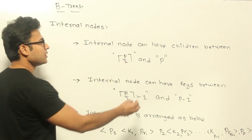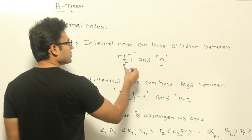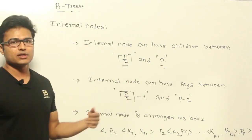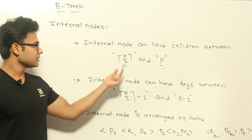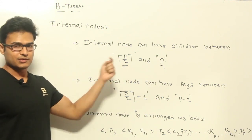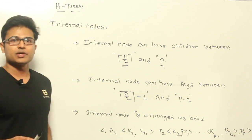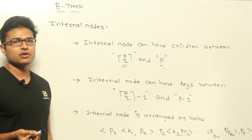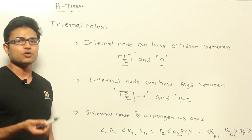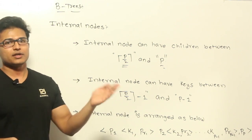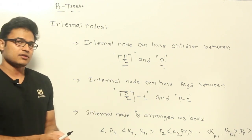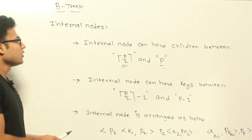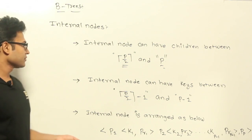Once we find out P, then we can find out what is the minimum number of children. If a node is not going to have at least P/2 children, we generally don't keep that node. And similarly, even a root is supposed to have at least 2 children. If it is not going to have 2 children, then there is no need of the root — we call it a single node. And if the tree is so small, then there is no need of a tree at all.